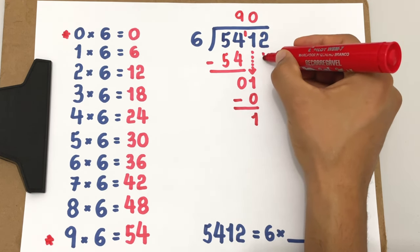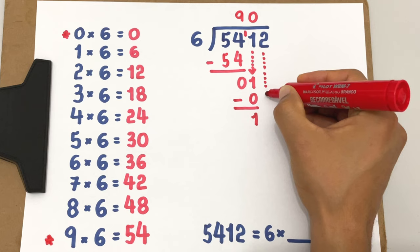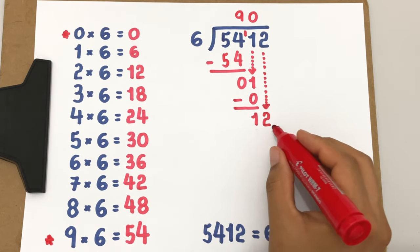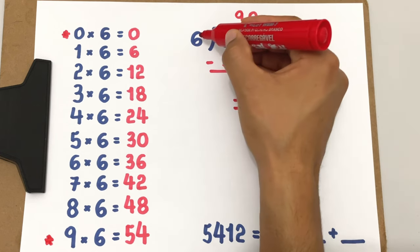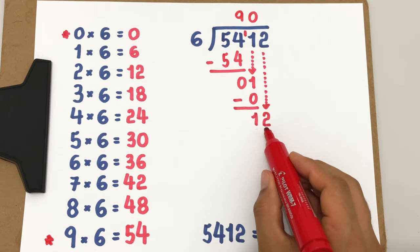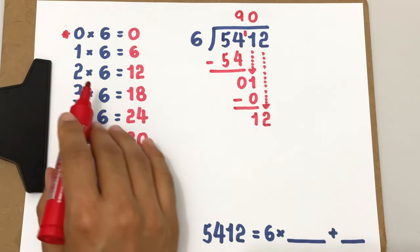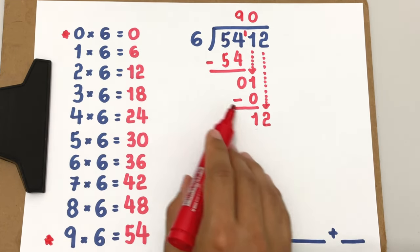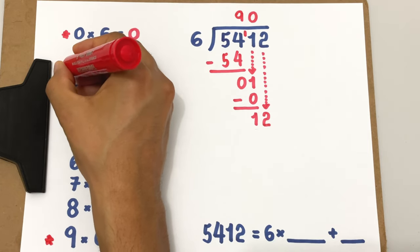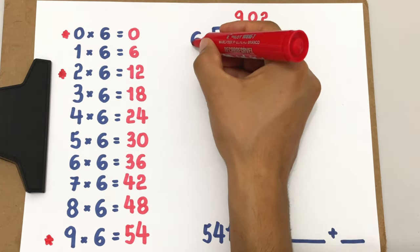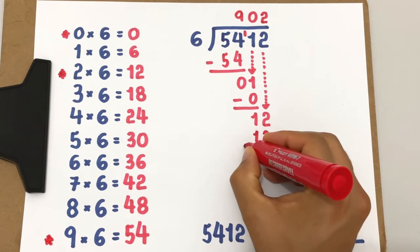After a subtraction, I bring down the next digit, which is 2 now. Now we have here 12 and I ask the question. What number do I multiply by 6 to get 12 or almost 12 but not more than 12? You know that 2 times 6 equals 12, so the number we want is 2, that's what I write here. 2 times 6 equals 12, that's what we have here.